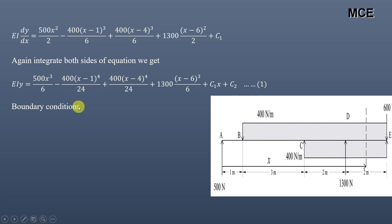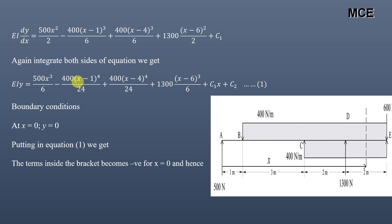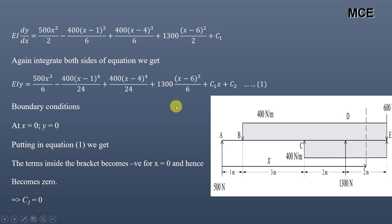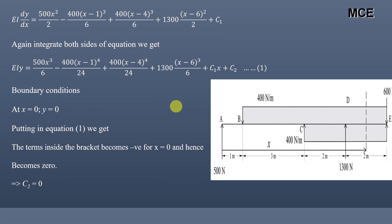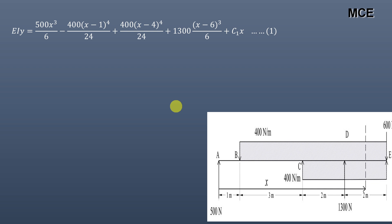First boundary condition: at x = 0 (support A), deflection y = 0. Substituting x = 0 into the deflection equation, all bracketed terms (x−1), (x−4), (x−6) become negative, so they are all taken as zero. This reduces the equation to 0 = 0 + C2, giving C2 = 0.